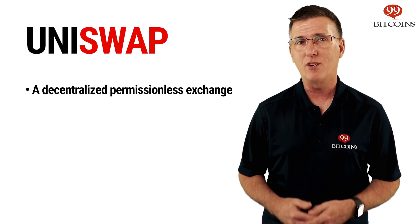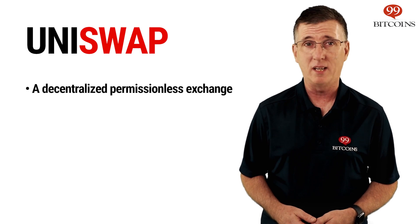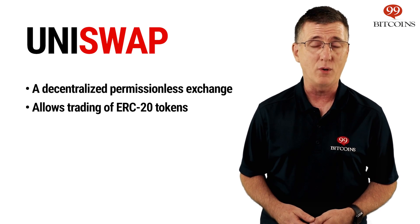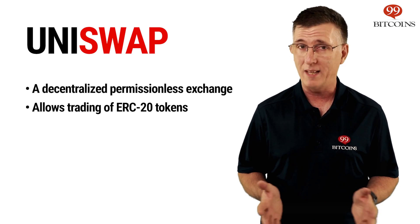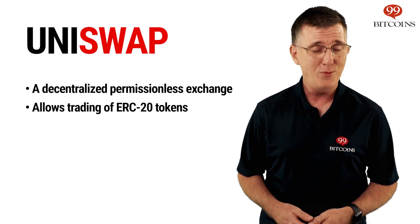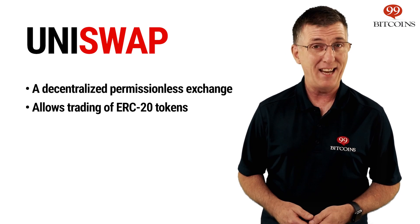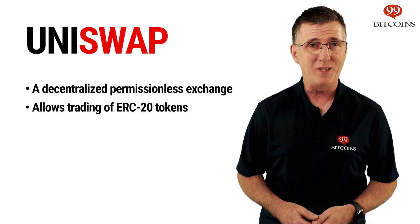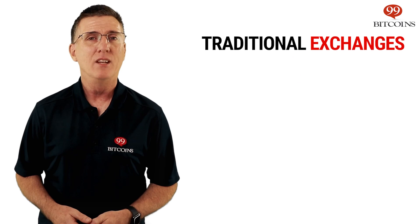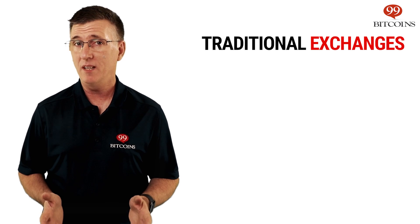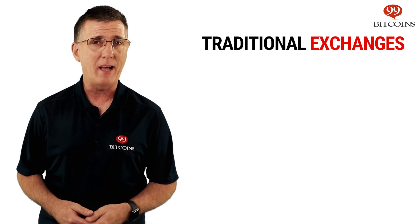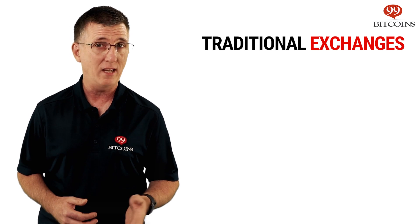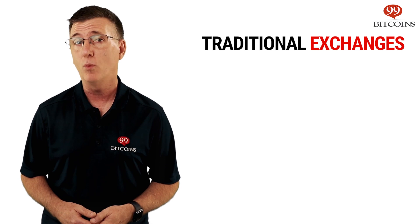Uniswap is a decentralized, permissionless exchange that allows anyone to trade Ethereum ERC20 tokens directly without the use of a middleman. To understand what makes Uniswap different, let's start out by taking a look at how a traditional cryptocurrency exchange like Kraken or Bitstamp works.